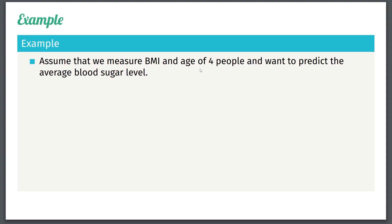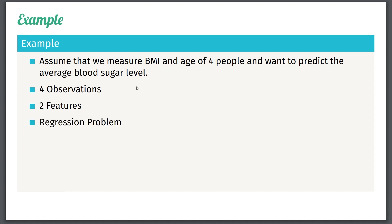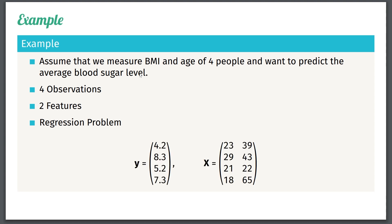In this case we are going to assume that we have measured the BMI and the age of four different people — four observations — and what we want to predict is the blood sugar level. So we have four observations and two features, namely BMI and age. This is a regression problem because the average blood sugar level is a number. For example, one person has a BMI of 23 and an age of 39 with a blood sugar level of 4.2, and another has a BMI of 29 and an age of 43 with a blood sugar level of 8.3, and so on for all four observations.